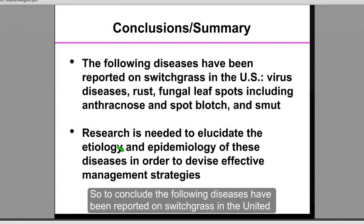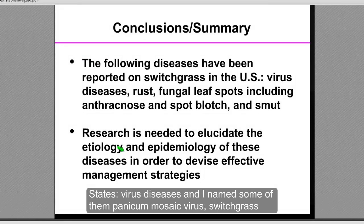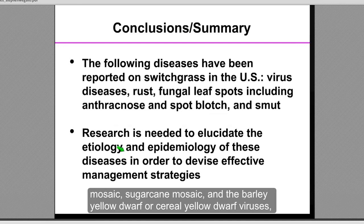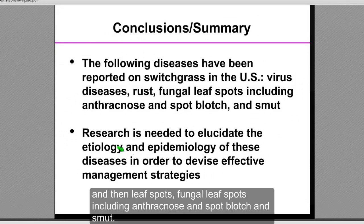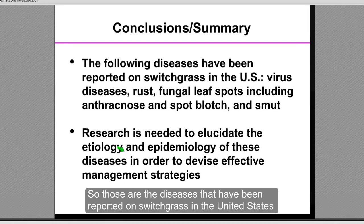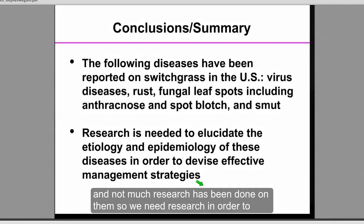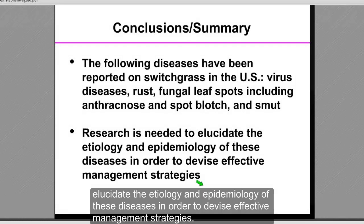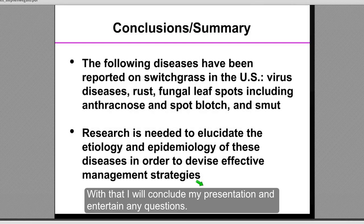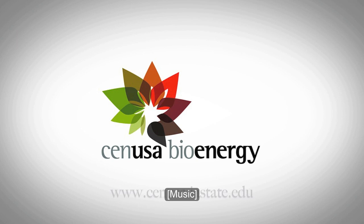To conclude, the following diseases have been reported on switchgrass in the United States: virus diseases including panicum mosaic virus, switchgrass mosaic, sugarcane mosaic, and barley/cereal yellow dwarf viruses; fungal leaf spots including anthracnose and spot blotch; rust; and smut. Not much research has been done on them, so we need research to elucidate the etiology and epidemiology of these diseases, which will enable us to devise effective management strategies. With that, I will conclude my presentation and entertain any questions.